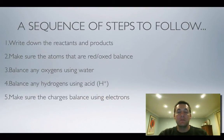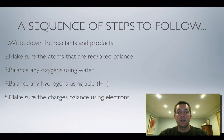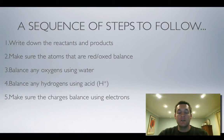The steps we're going to follow are similar to the ones used before but with a little more complexity. First, write down the reactants and products. Then make sure the atoms that are reduced or oxidized balance — you'll need to check which ones changed oxidation number. Next, balance any oxygens using water molecules, then balance any hydrogens using H⁺ ions, and finally use electrons to balance the charge.